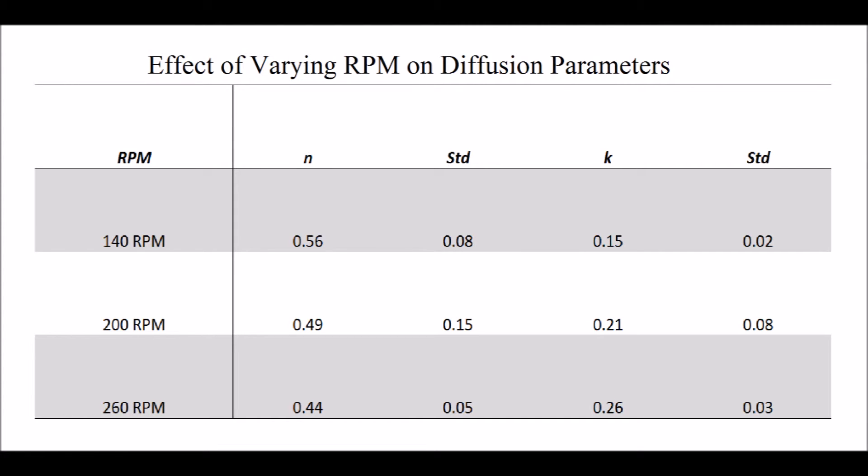The table shown represents all of the data for our agitation rate experiment. It contains both the geometric shape exponent and diffusion constant along with standard deviations. When the RPM of the system is around 260, we observe Fickian diffusion as n is 0.44. When the RPM is lower, we notice that the diffusion is driven by non-Fickian interactions as seen in the 140 RPM and 200 RPM trial.